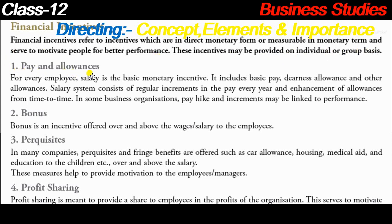The first financial incentive is pay and allowances - every employee should receive salary and basic incentives. This includes basic pay, dearness allowance, and other allowances. The salary system should include regular increments every year and enhancement of allowances from time to time. If your increment keeps happening regularly, you also enjoy working more.